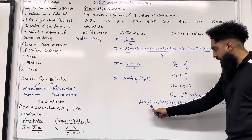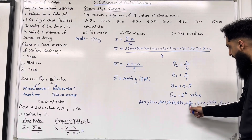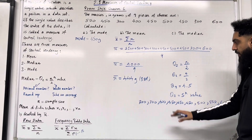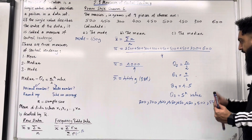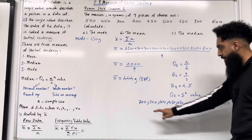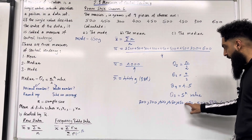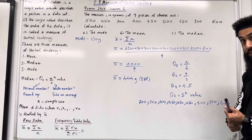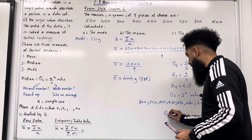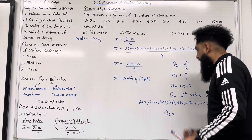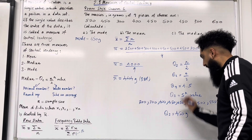With the 9 data values arranged in ascending order, we count to the fifth value: 1, 2, 3, 4, 5. The fifth value is 450. So the median Q2 is equal to 450 grams.